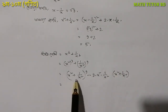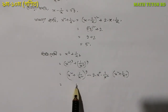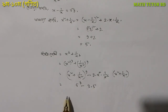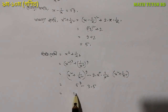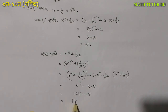Here the value of x² plus 1 by x² is 5. So substituting, we get 5 cubed minus 3 into 5. 5 cubed is 125, and 3 into 5 is 15. So 125 minus 15 gives us 110. That is the answer.